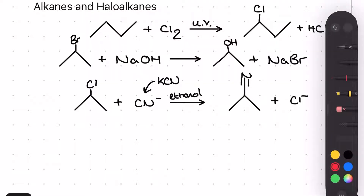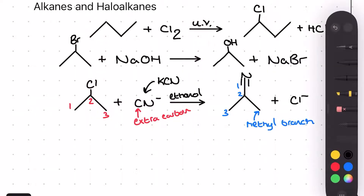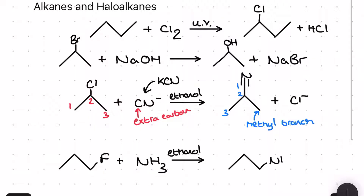This reaction is incredibly important in the A-level because it introduces an extra carbon to the chain. For the final haloalkane reaction, I'm taking a haloalkane and reacting it with excess ammonia in the presence of ethanol to make a primary amine and some hydrogen halide — here using 1-fluoropropane to produce propan-1-amine. You could also use a primary or secondary amine instead of ammonia to produce a secondary or tertiary amine respectively.